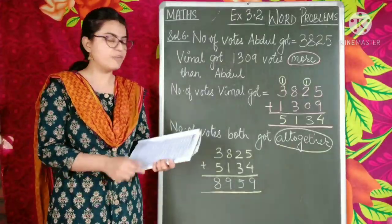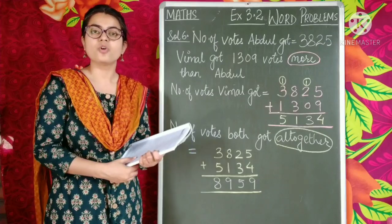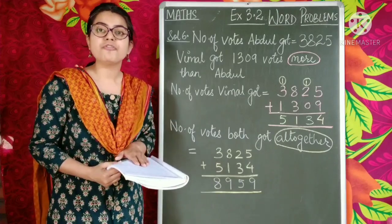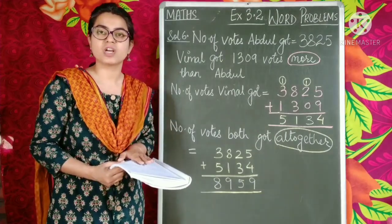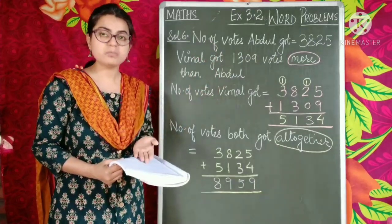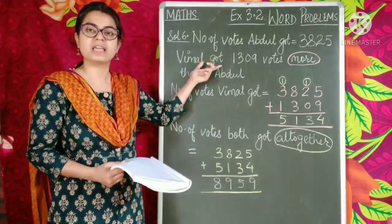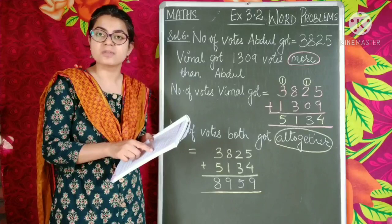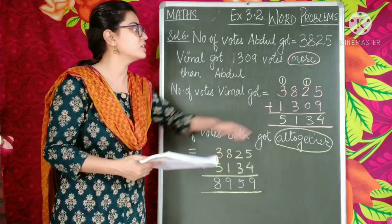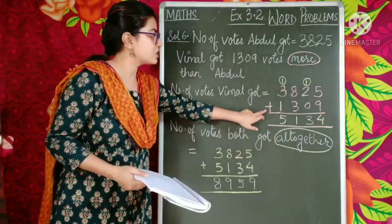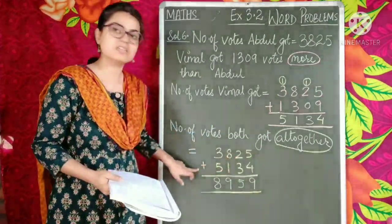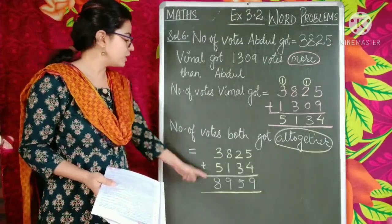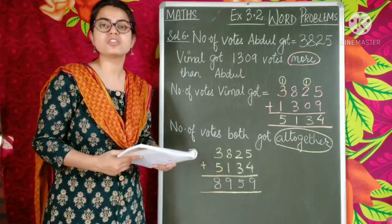So children, in this way you will solve the other word problems. What do we have to do? First, read the question. Then try to find out the information given in the question to make the statements — statements are very important for the word problems. Then we look for the keywords to identify the word problems. Here our keywords were 'more' and 'altogether' which let us know that this is an addition-based word problem. And then you simply write the final statement that both of them got 8,959 votes altogether. Thank you.